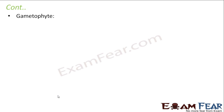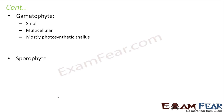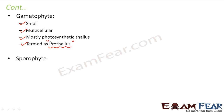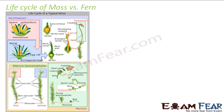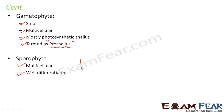Now let us look at the distinction between the gametophyte and sporophyte in a fern. The gametophyte is small, multicellular, and mostly a photosynthetic thallus — it has the green pigment and can perform photosynthesis. This gametophyte is often termed the prothallus. The sporophyte, on the other hand, is multicellular and well differentiated, which is why it becomes the dominant phase.